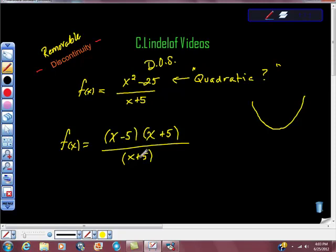Now here's where something good happens, but we have to be a little bit careful. Hopefully you can see this, that the x plus 5s can factor out, right? So given that they can factor out, isn't it true that our function really is f of x is equal to x minus 5?